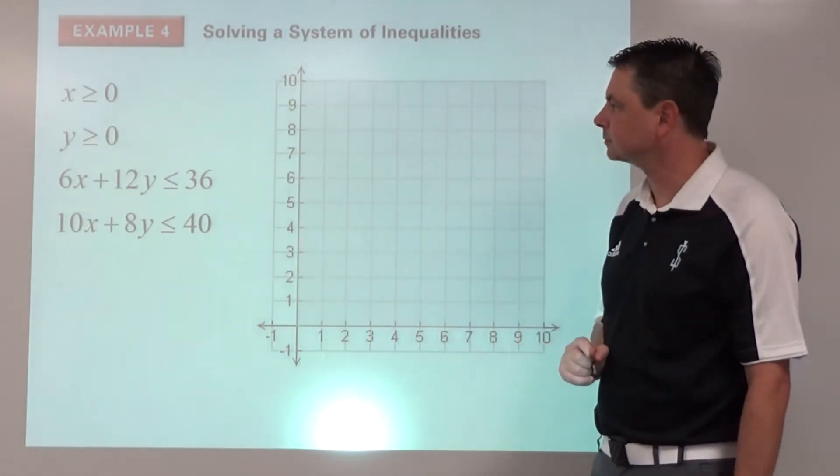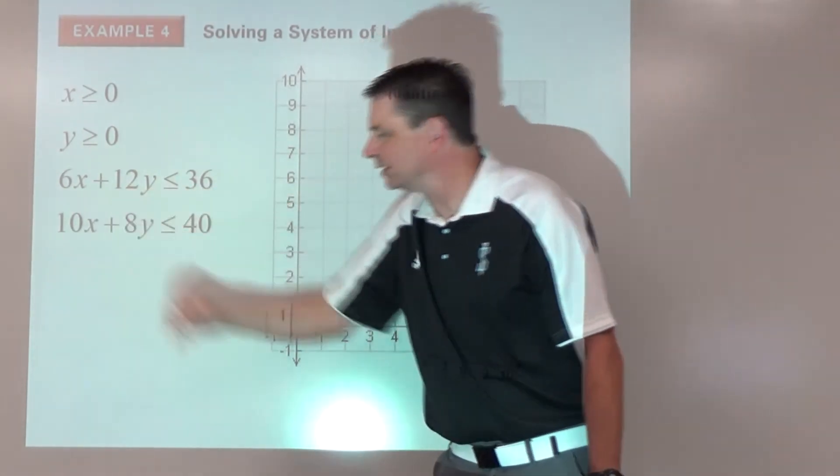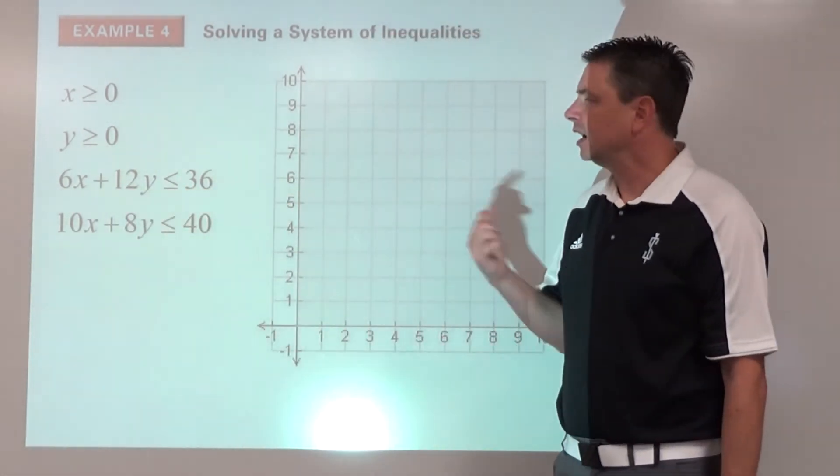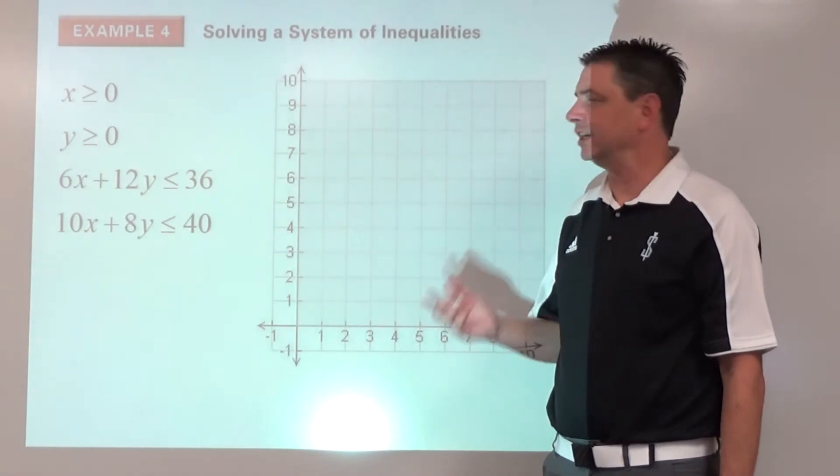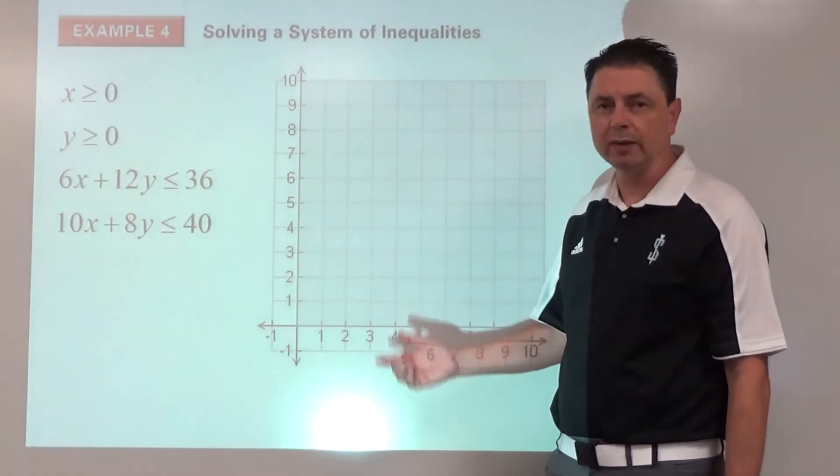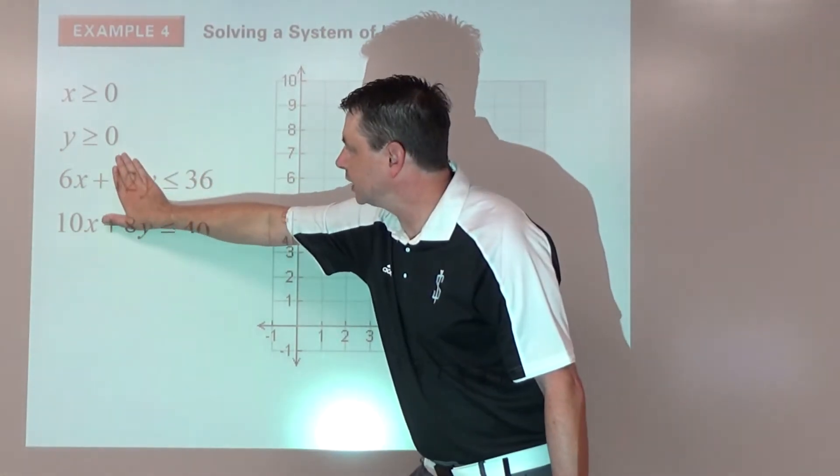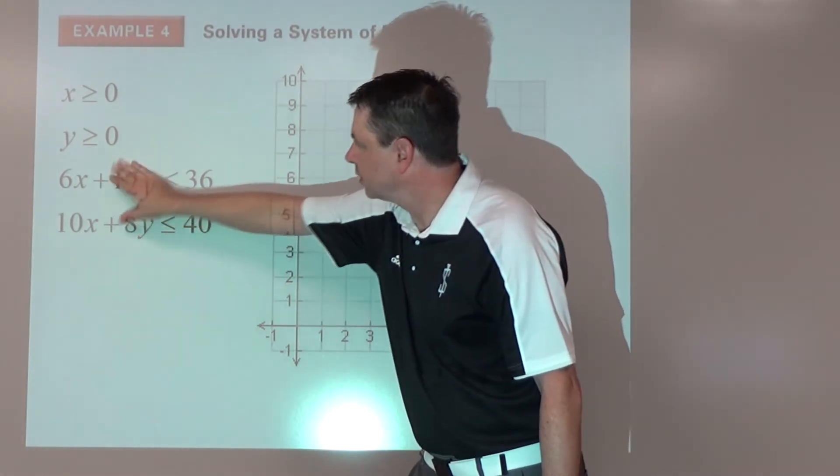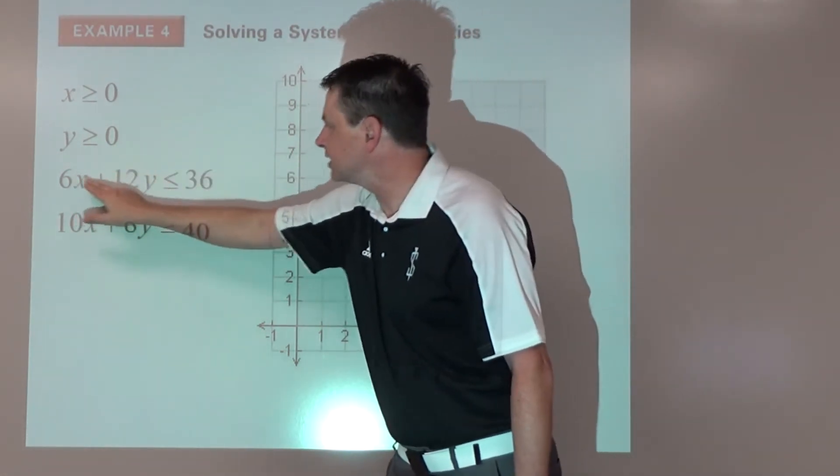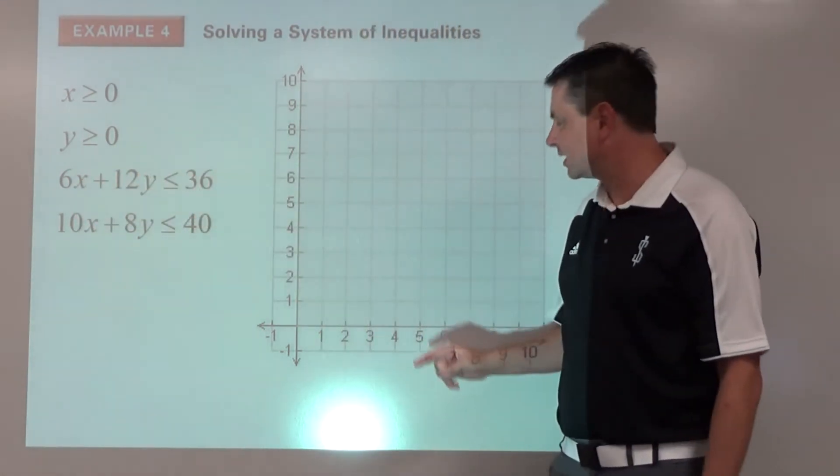Now for this one, there are multiple ways of doing this. I think I'm going to do this by finding intercepts, cover-up method. If I cover up here, I'm going to find the x-intercept, pretending this is equals. 6x equals 36, so x is 6.